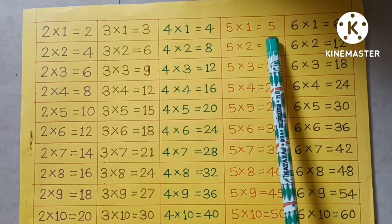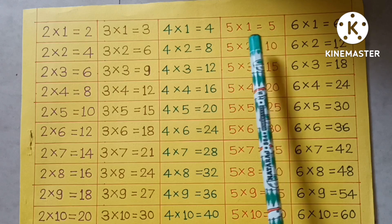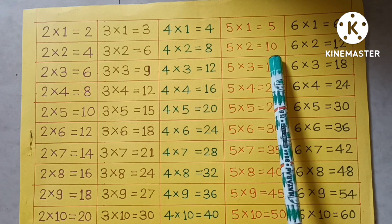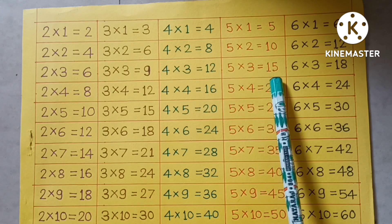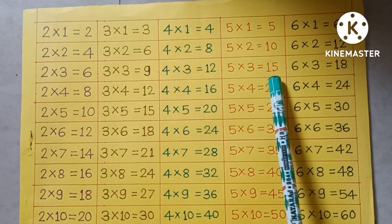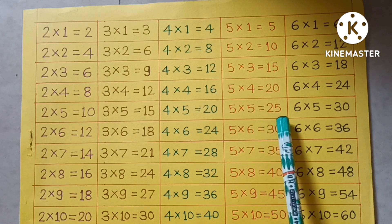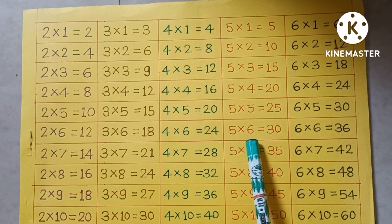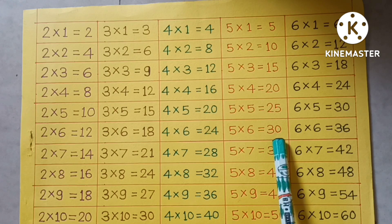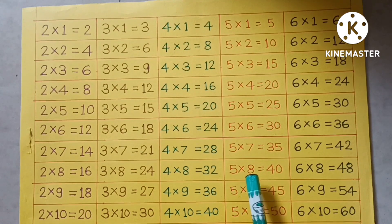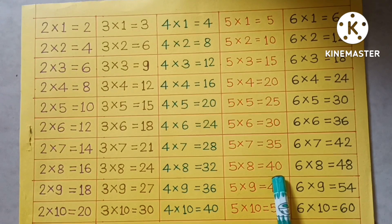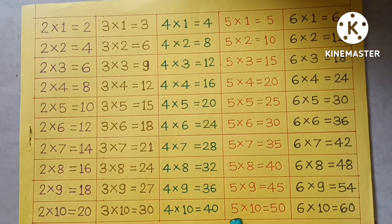5×1=5, 5×2=10, 5×3=15, 5×4=20, 5×5=25, 5×6=30, 5×7=35, 5×8=40, 5×9=45, 5×10=50.